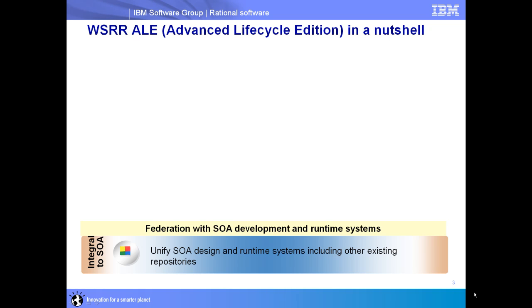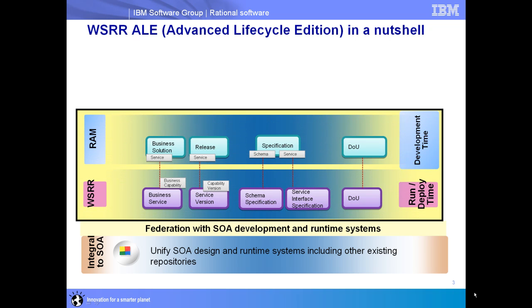IBM's solution is to unify both the design and development part of governing SOA services along with the runtime systems. We're offering a bundle: WebSphere Service Registry and Repository for the runtime components, and Rational Asset Manager, which is highly optimized for the design and development part of SOA governance. RAM contains development-oriented assets — business cases, documents of understanding, the charter, implementations, and the actual service code itself.